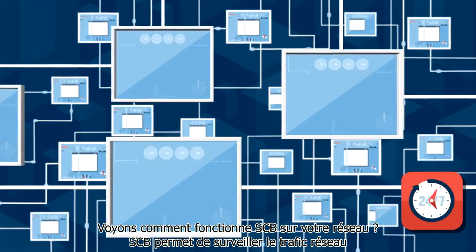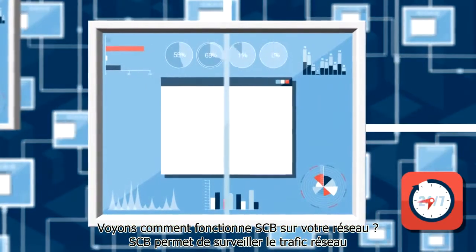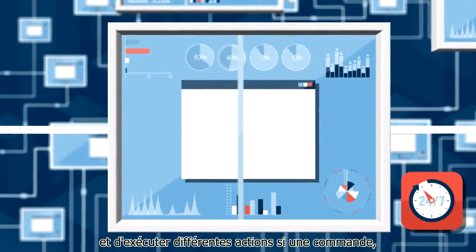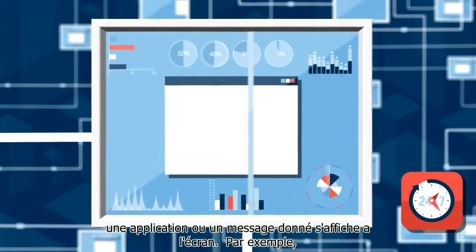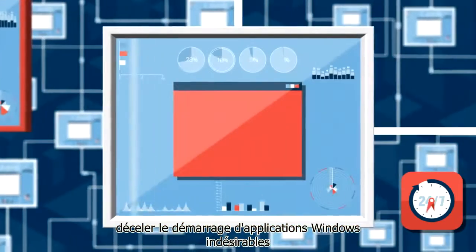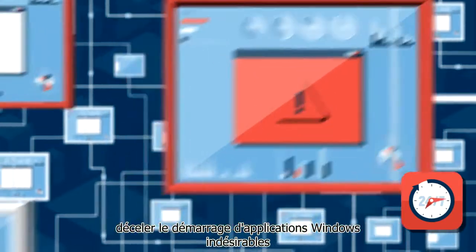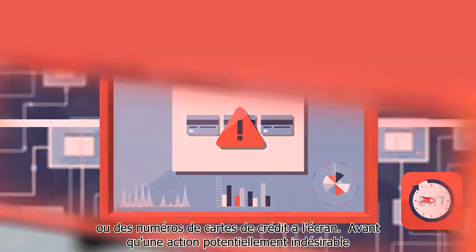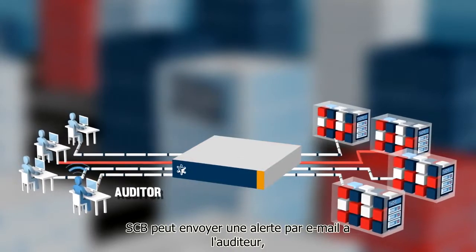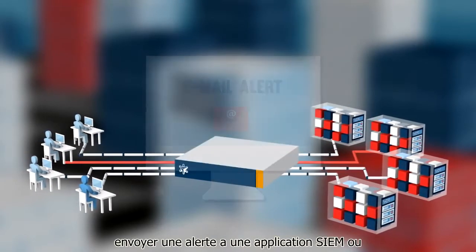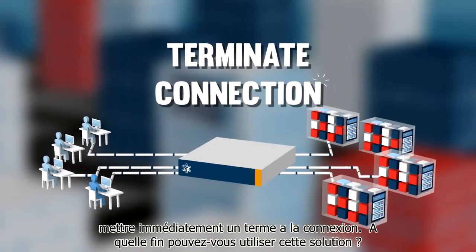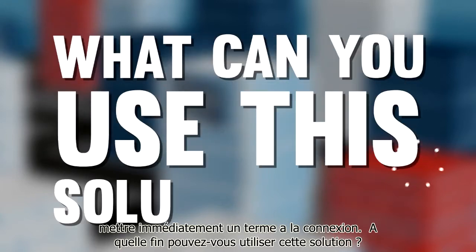Your existing IT environment requires no change, and your staff can do their daily jobs without changing their working habits. SCB can monitor network traffic in real-time and execute various actions if a suspicious command, application, or text appears on the screen. For example, it can detect risky commands entered on the console, detect startup of unwanted Windows applications, or detect credit card numbers on the screen. Before a potentially harmful action can take place, SCB can send an email alert to the auditor, send an alert to a SIEM application, or immediately terminate the connection.